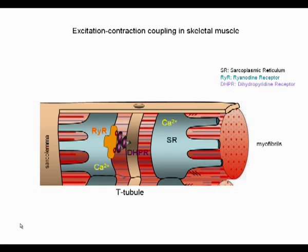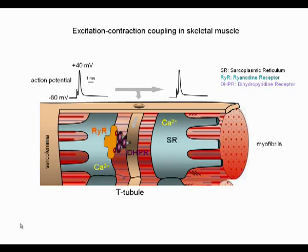Stimulation of the skeletal muscle fiber triggers an action potential that spreads along the sarcolemma and tubular membrane. Depolarization of the tubular membrane induces a change in the configuration of the dihydropyridine receptor, which in turn provokes the opening of the ryanodine receptor, a calcium channel in the sarcoplasmic reticulum that releases calcium and triggers contraction. The whole process coupling intracellular calcium increase to electrical activity is called excitation-contraction coupling.